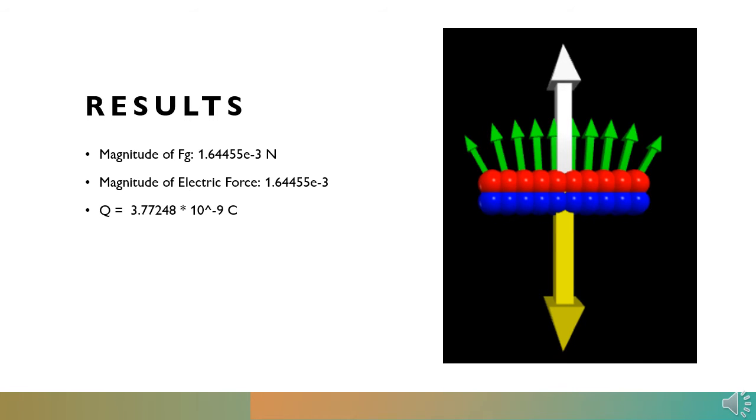That resulted in this photo, which shows the effects on the top tape due to each charge in the bottom tape, both individually and summed. When summed, the electric force represented by the biggest upward arrow exactly counteracted the force of gravity, which is the downward pointing arrow. This makes sense because in the experiment, the top tape floated.